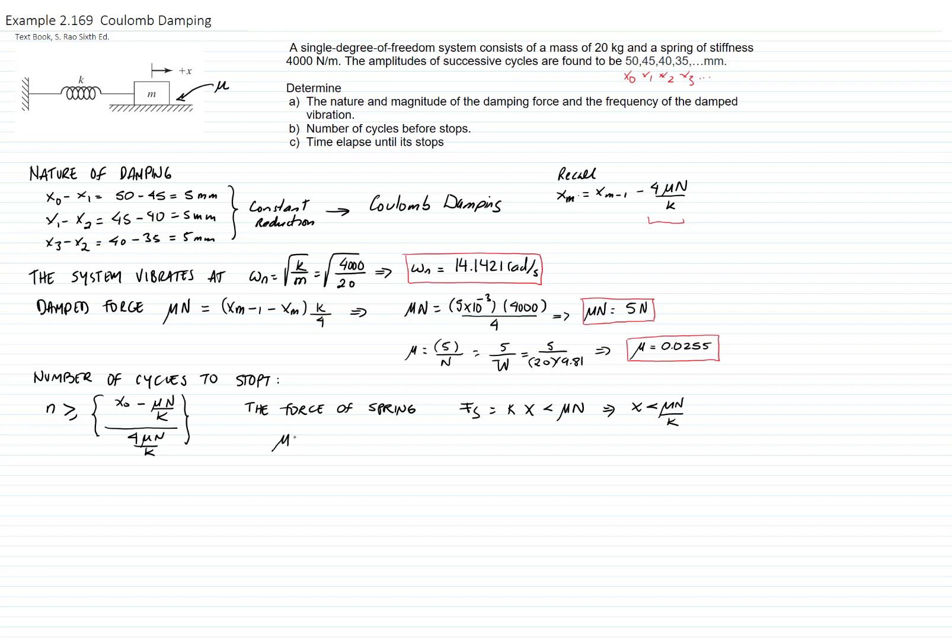So we calculate mu n over k, and that gives me 0.025. I'm using more decimals than the ones that I wrote in the result. Times 20 times 9.81 divided by 4,000. That gives me a value of 0.00125.